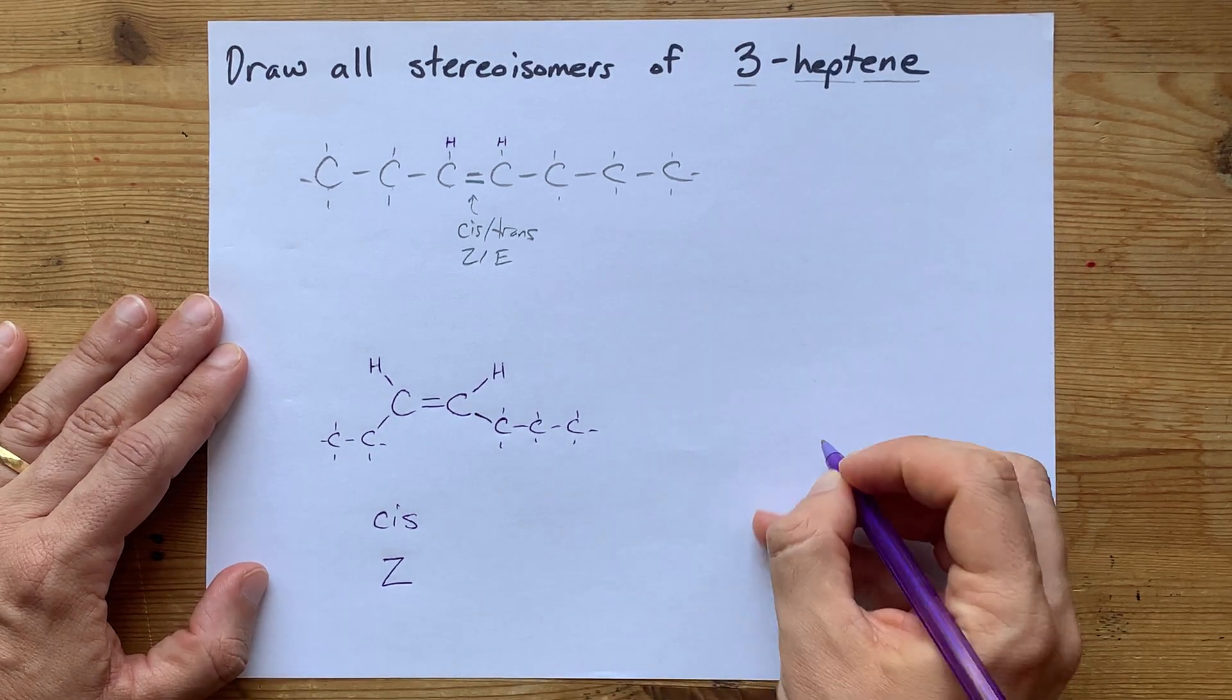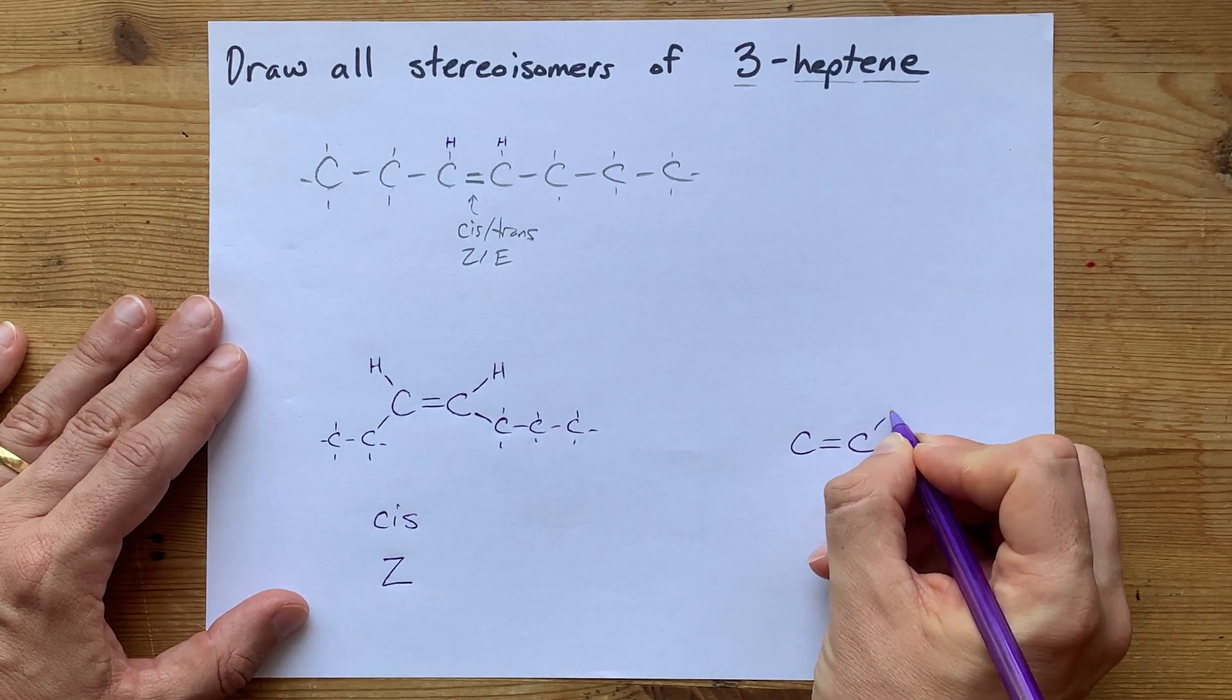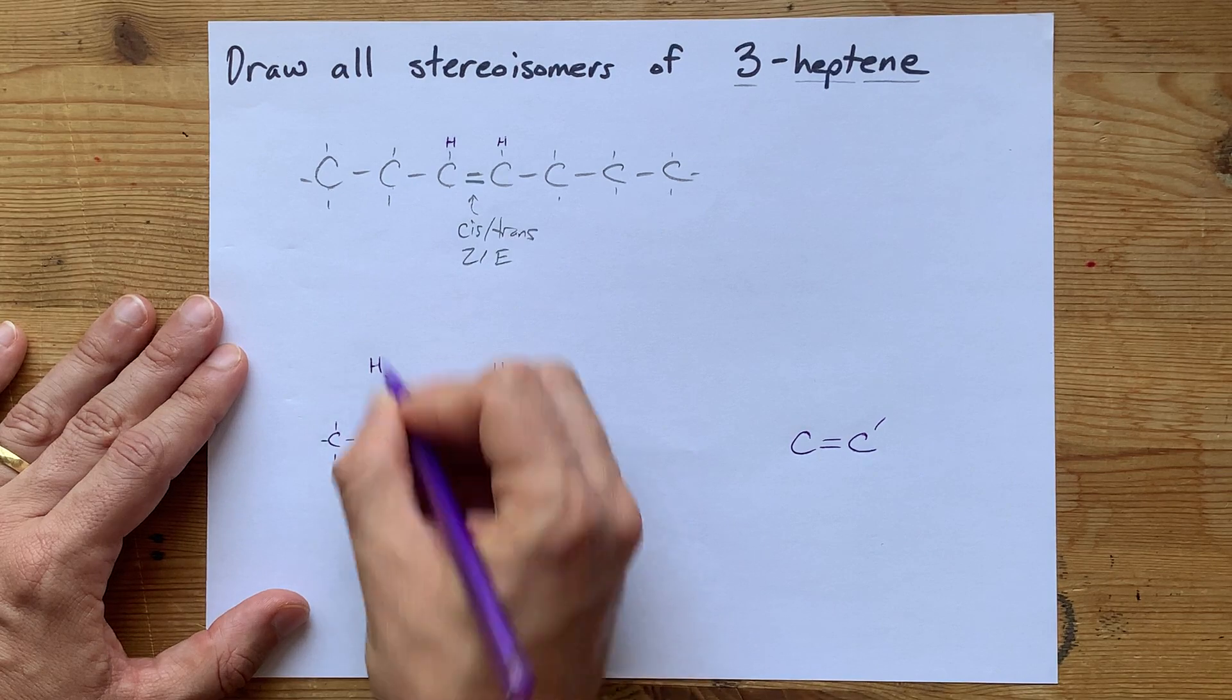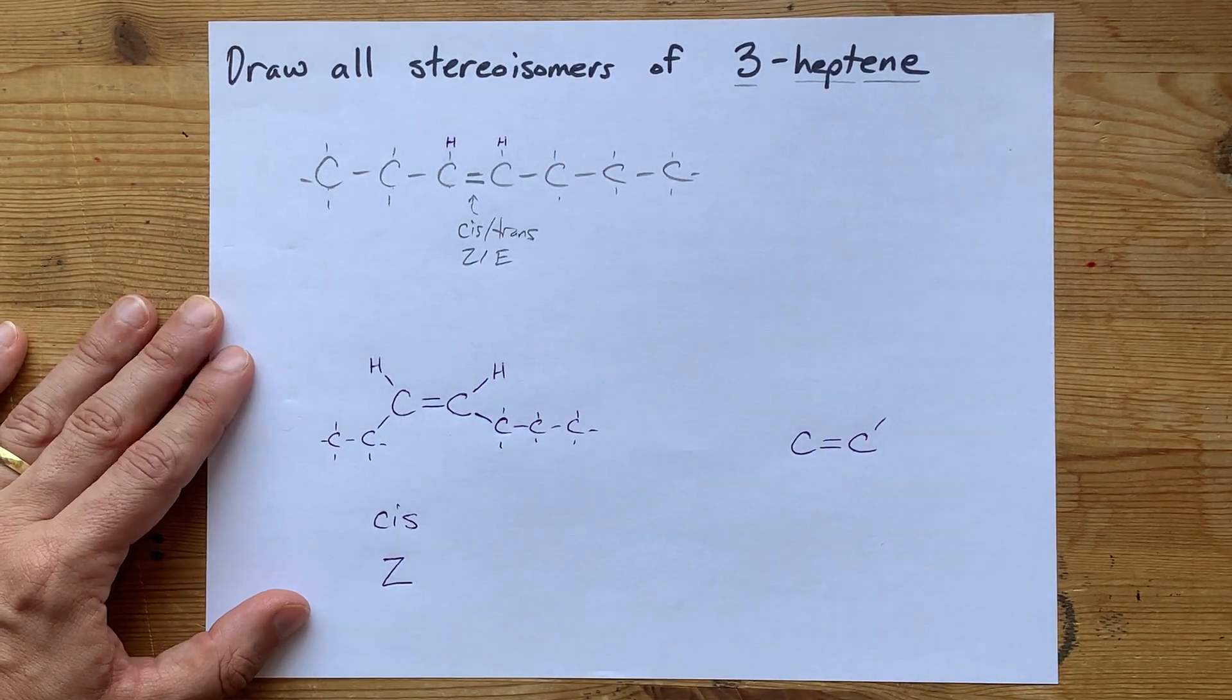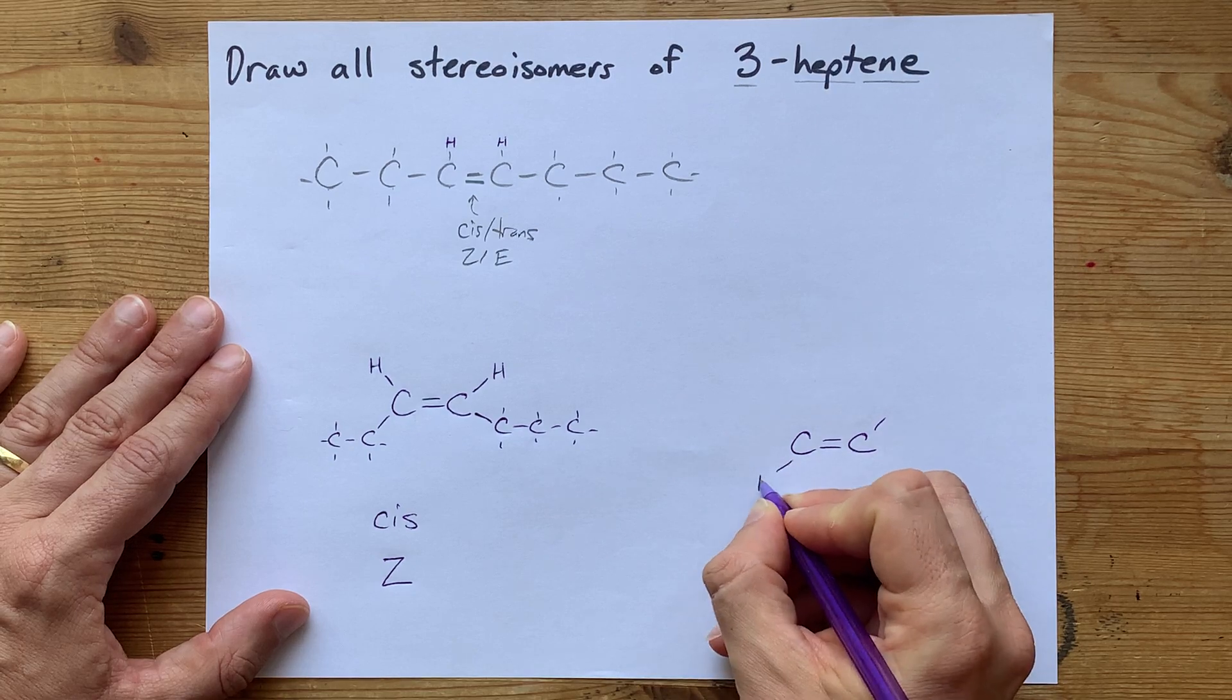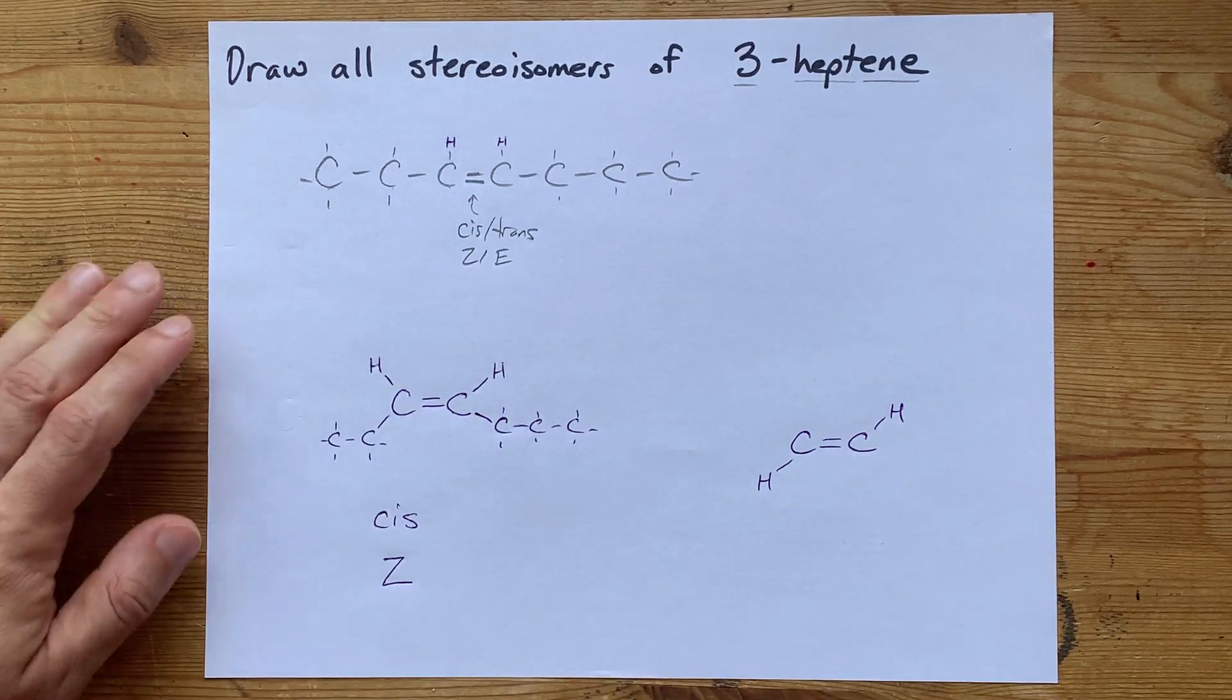Then, we're going to try the trans version, double bond between those two carbons, but instead of the H's being both on the same side of that horizontal axis of the double bond, they are on opposite sides. It doesn't matter if you do top left, bottom right, or bottom right, top left.